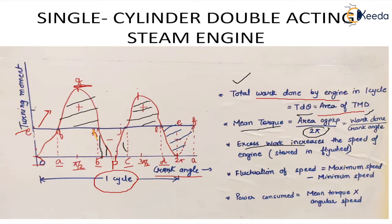The energy given back by the flywheel can also be found from the graph. The fluctuation of speed is the difference between the maximum and minimum speed. In one complete cycle there are two points of maximum speed and two of minimum speed; the highest of the maxima and the lowest of the minima give the fluctuation of speed. Power consumed equals mean torque multiplied by the angular speed of the crank.